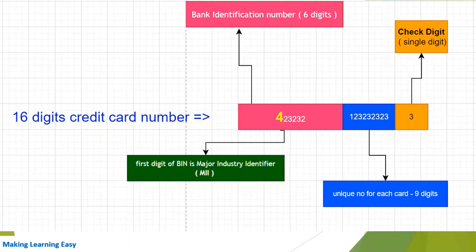In the diagram, the middle box shows the 16 digits of the credit card number. The first six digits at the top represent the Bank Identification Number, and the very first digit of this Bank Identification Number is called the Major Industry Identifier, which I have mentioned in the green box.